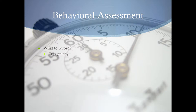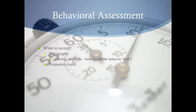We can develop checklists on how the behavior should look - did you do this, did you go inside the lines? We could also measure frequency - how many words am I going to speak per minute? Notice I added a rate there, because frequency over time becomes a rate. Frequency is just how many times did a behavior happen; you add time to make it a rate.